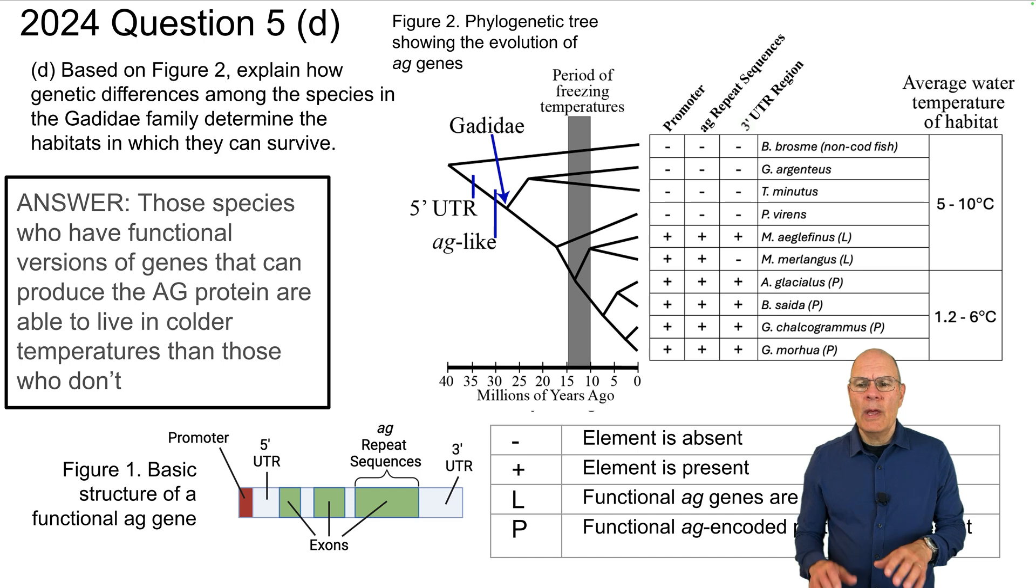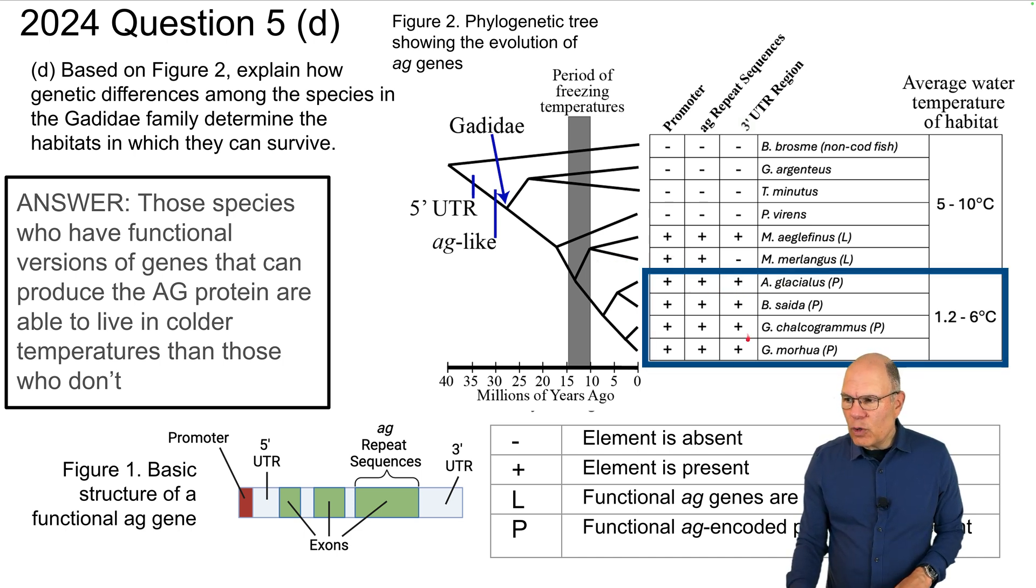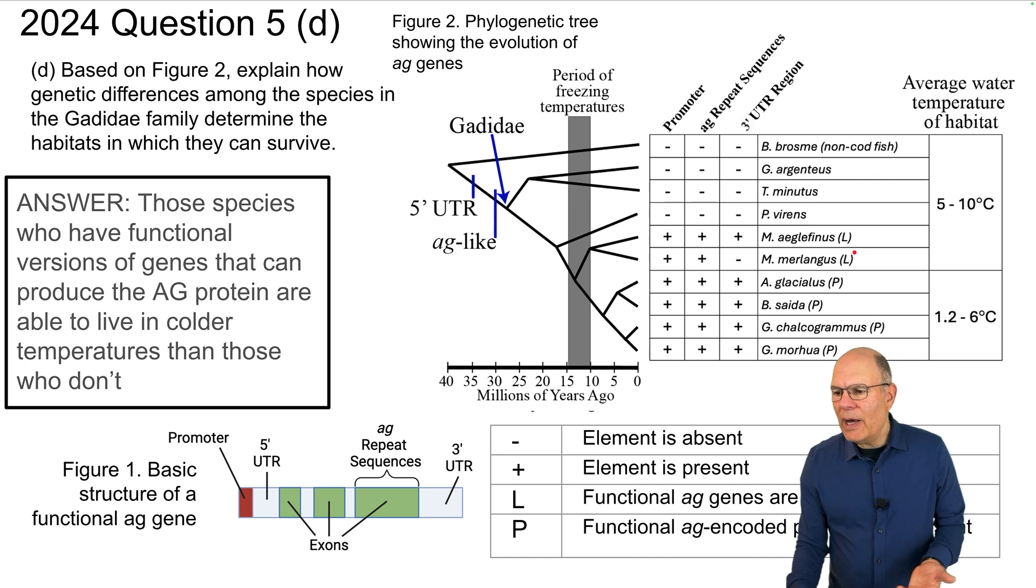Here's the answer to 5d. Those species who have functional versions of genes that can produce the AG protein are able to live in colder temperatures than those who don't. And you can look over here at the phylogenetic tree and you can see that in all of these four species who live in the coldest waters, they have all of the gene elements and they're all functional as opposed to in these two species which are also members of the clade but some of those AG encoded genes are lost. They're not living in these colder waters.